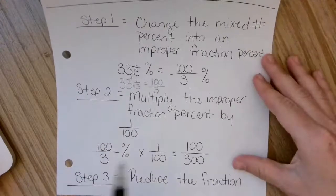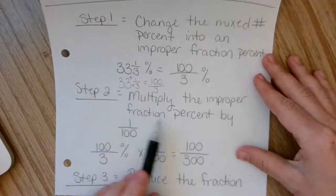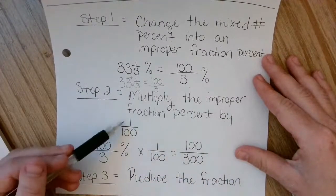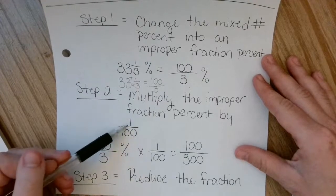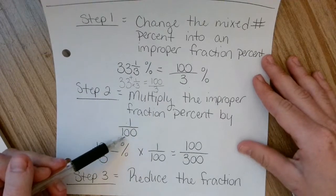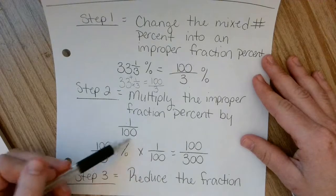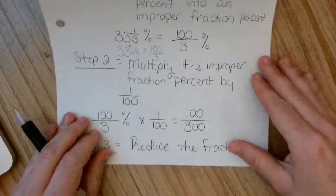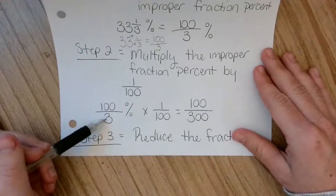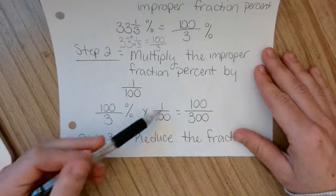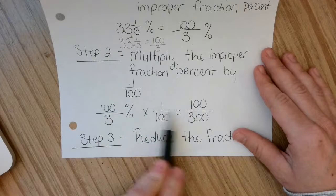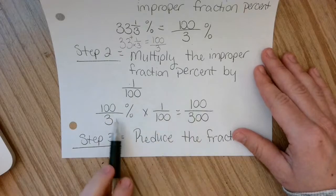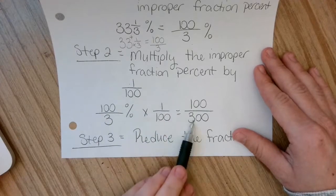Step 2 is to multiply the improper fraction percent by 1 over 100. It's always going to be 1 over 100 that you multiply it by. That fraction is never going to change. So I have 100 third percent times 1 over 100. So 100 times 1 gives me 100. 3 times 100 gives me 300.